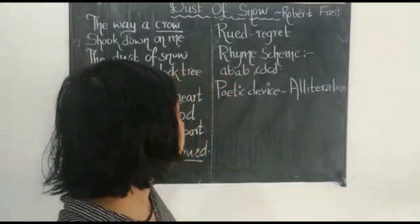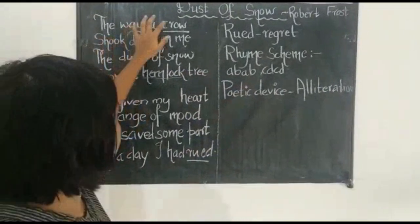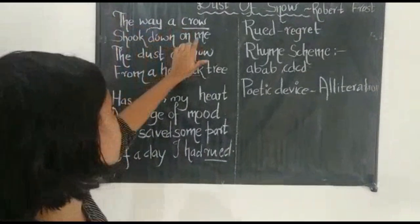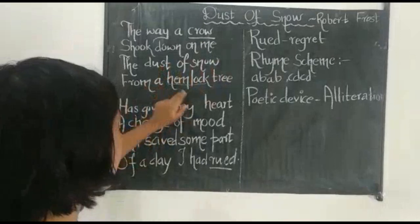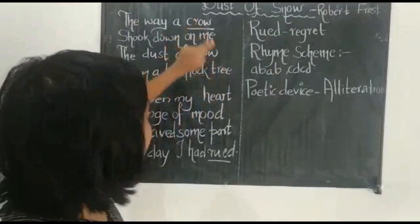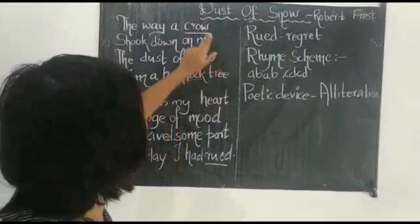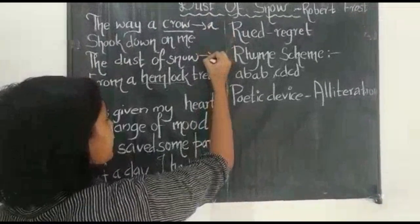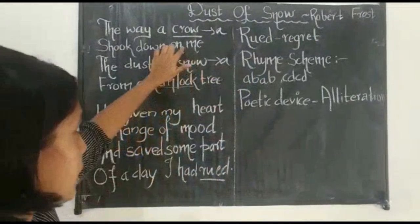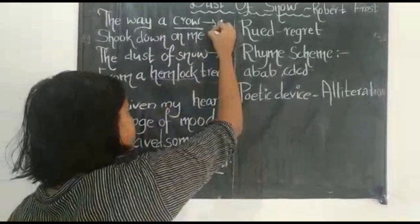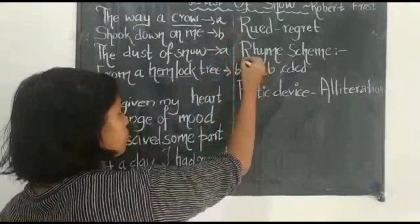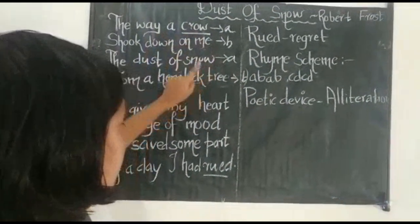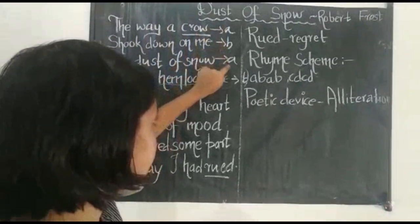Now we will look at the rhyme scheme. Read the first stanza: 'The way a crow shook down on me the dust of snow from a hemlock tree.' Crow and snow are rhyming words, so that's A A. Me and tree are again rhyming words, so B B. So the rhyme scheme of the first stanza is A B A B.